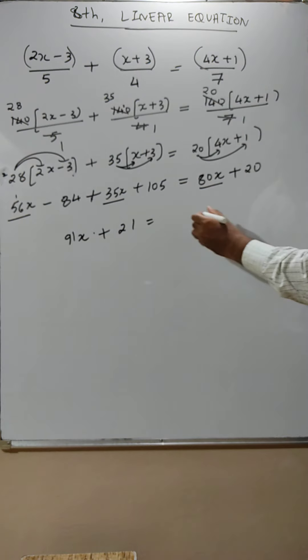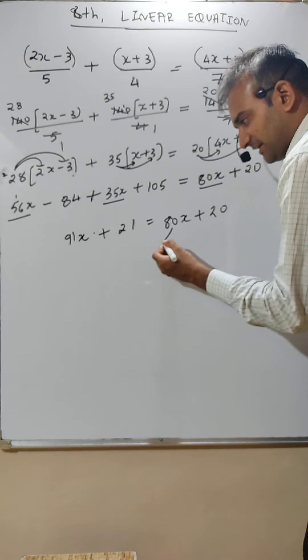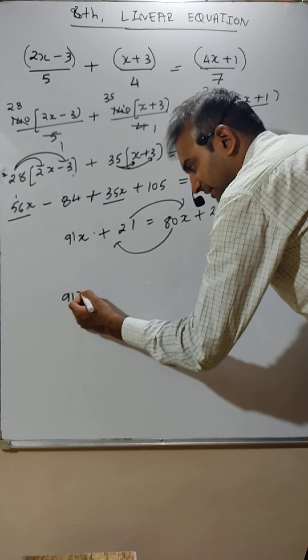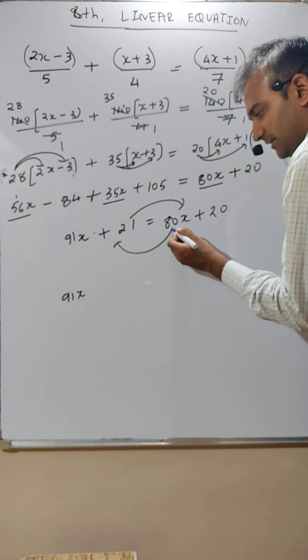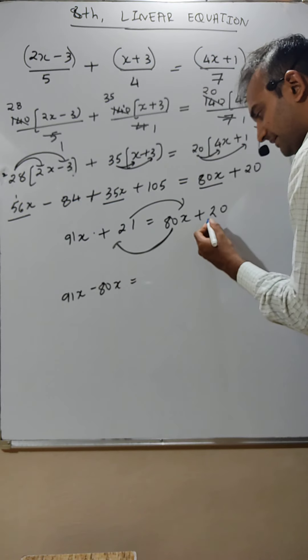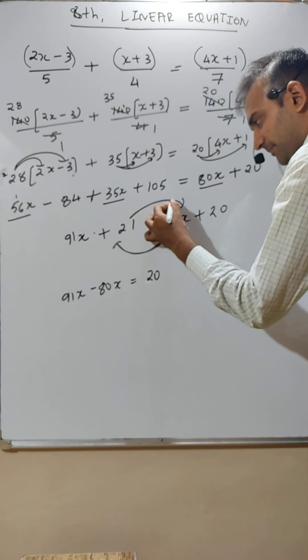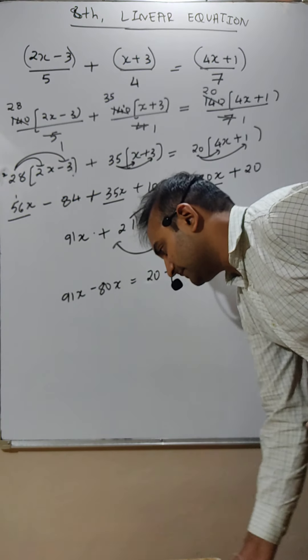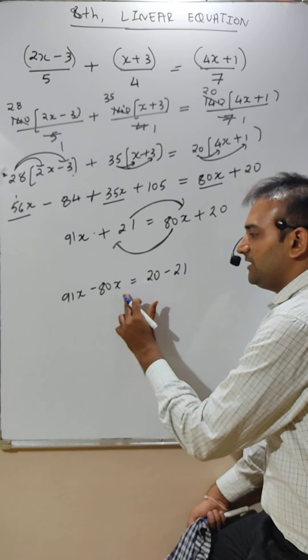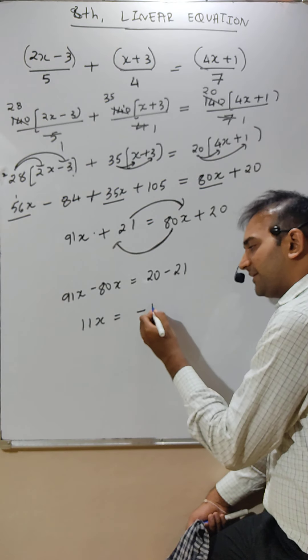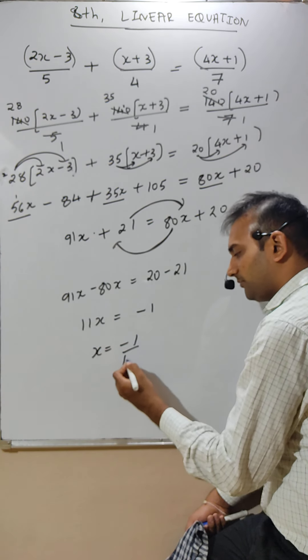You better take x ka family one side and numbers ka family one side. So x ka family came this side, 91x minus 80x, and here it is 20 and number ka family went this side means minus 21. 91x minus 80x is 11x, 20 minus 21, so x is equal to minus 1 upon 11.